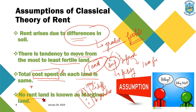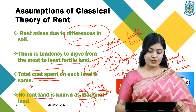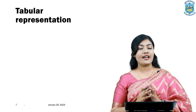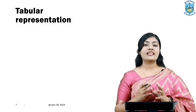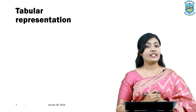The last assumption is that no-rent land is known as marginal land. According to Mr. David Ricardo, marginal land is a type of land which produces zero rent. This type of land is known as the marginal land. We have now understood all the assumptions of the Ricardian Theory.